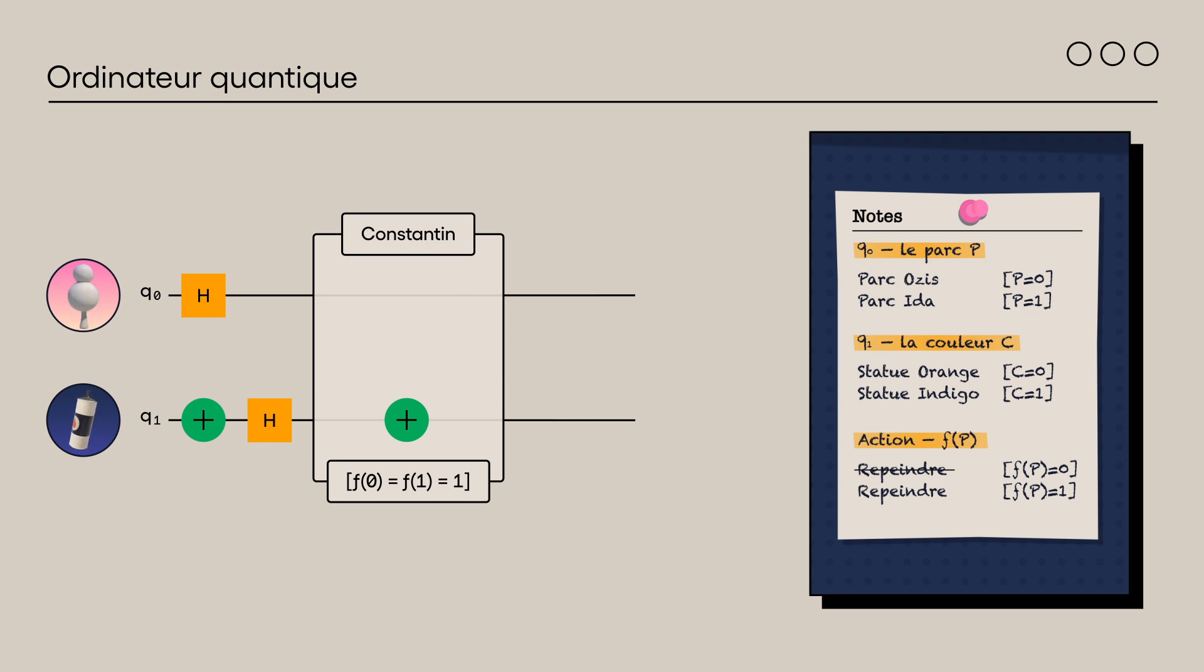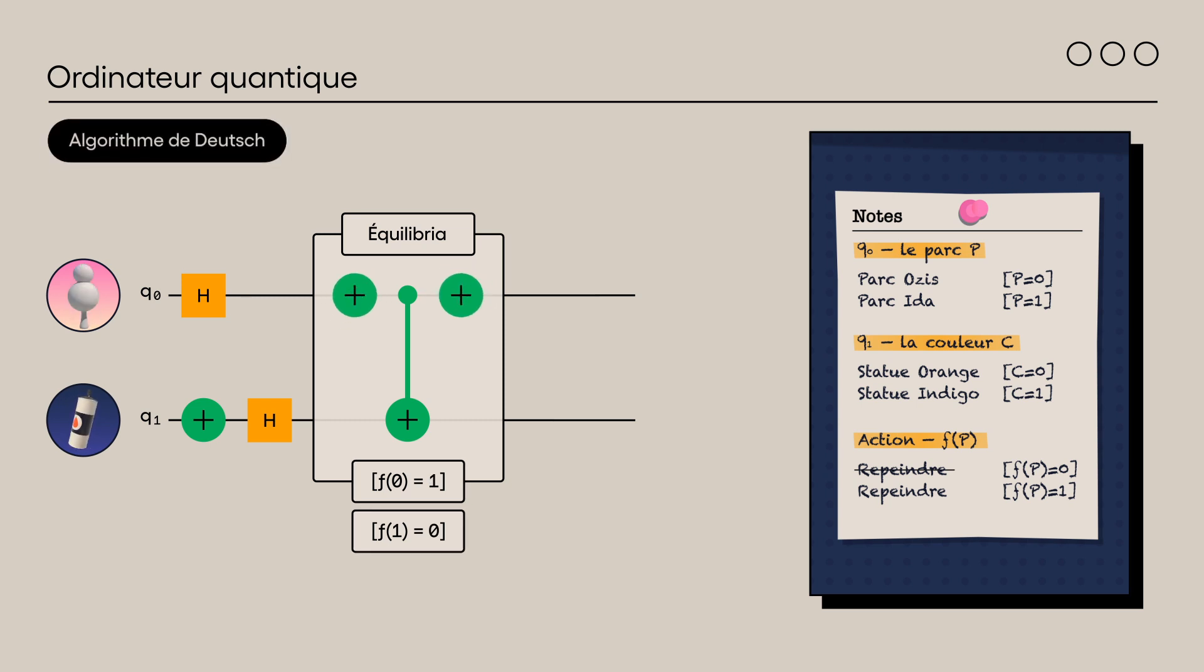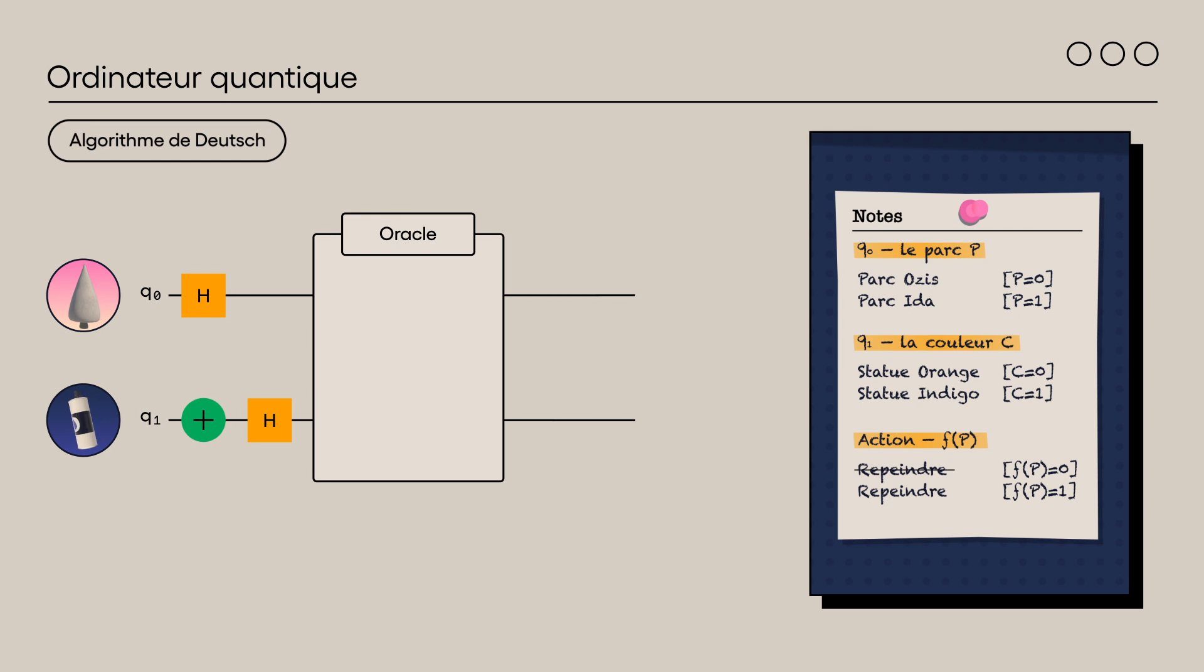Poursuivons avec le modus operandi d'Equilibria. Si elle change la couleur de la statue du parc Ida, on peut représenter ce cas par une simple porte CNOT entre Q0 et Q1. Ainsi, la couleur sur Q1 n'est changée que lorsqu'elle est dans le parc Ida. Equilibria pourrait aussi changer la couleur de la statue du parc Osis. Dans l'algorithme de Deutsch, l'action d'Equilibria ou Constantin se nomme l'oracle. L'oracle est donc un circuit quantique qui implémente une fonction constante ou équilibrée. L'oracle reçoit sur le premier qubit la valeur du parc P et la retourne à sa sortie. Sur le deuxième qubit, l'oracle reçoit la couleur C et l'additionne modulo 2 avec f de P pour donner la couleur finale.